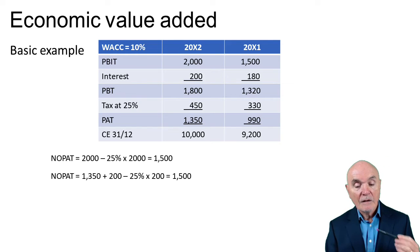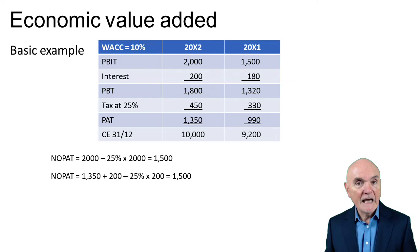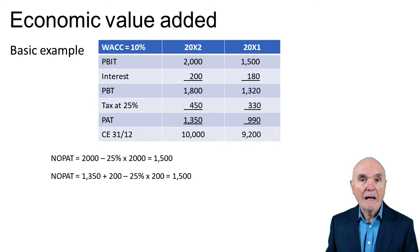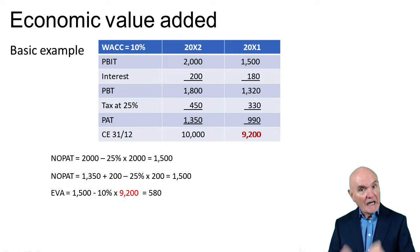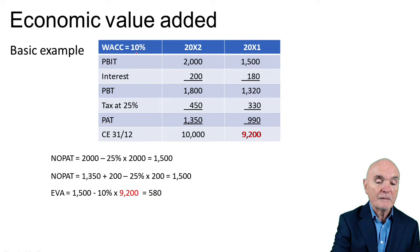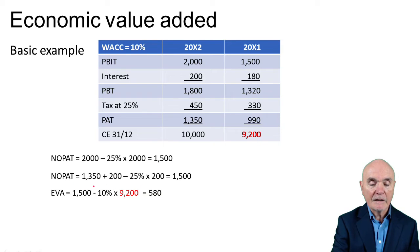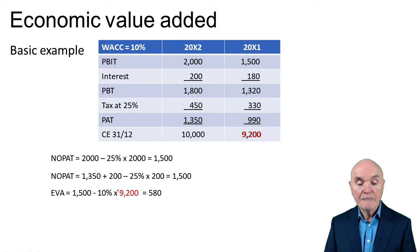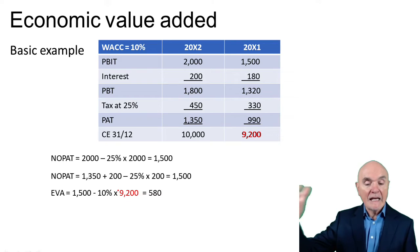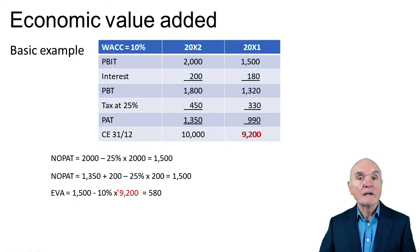The next step is to calculate economic value added: NOPAT minus the weighted average cost of capital applied to capital employed. That capital employed is at the start of 2X2 — in other words, the capital employed at the end of 2X1, which is 9,200. With WACC at 10%, the capital charge is 920. Subtracting that from 1,500 NOPAT leaves EVA of 580 — a nice positive figure. The capital cost is 920, we made 1,500, so we're ahead of the game by 580.